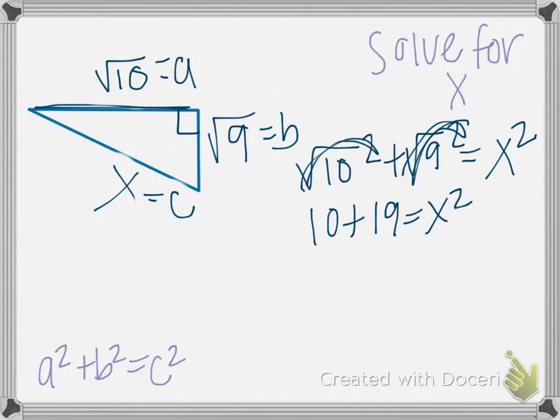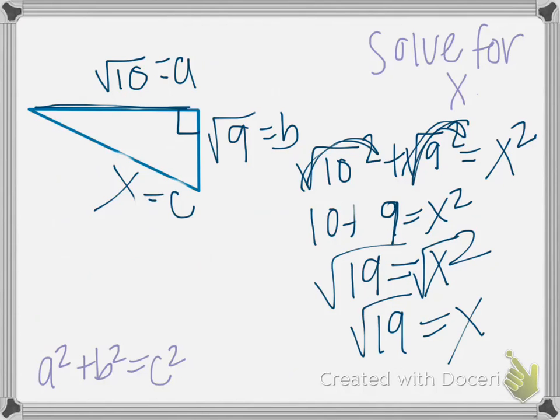Not 19, sorry guys, plus 9. 10 plus 9 is 19 equals X squared. We need to square root both sides, and we have the square root of 19 is equal to X.